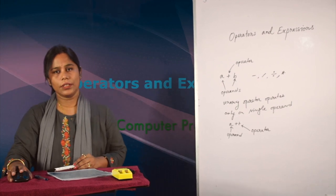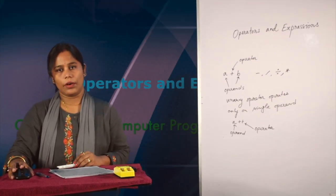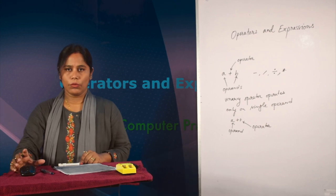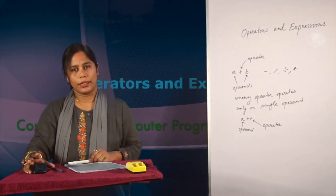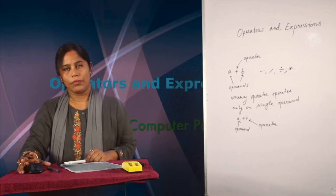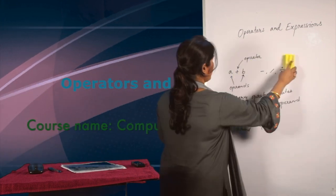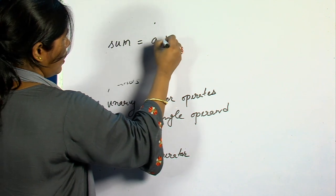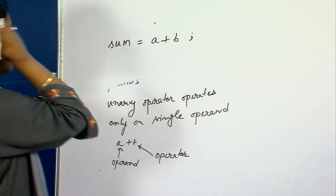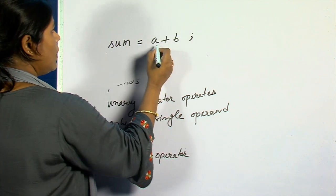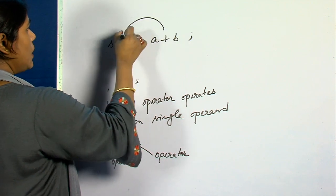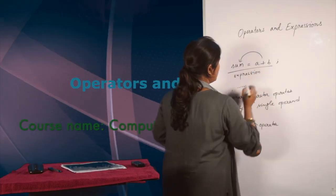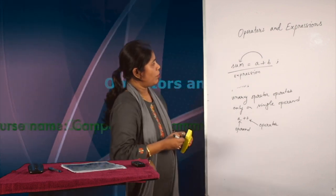What is an expression? An expression is a combination of variables, constants, and operators written according to the syntax of the language. In C language, every expression evaluates to a value — that is, every expression results in some value of a certain type, and that can be assigned to a variable. For example, sum equals A plus B is an expression; the result of these two variables is stored in the variable sum.